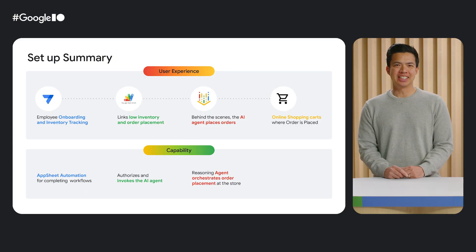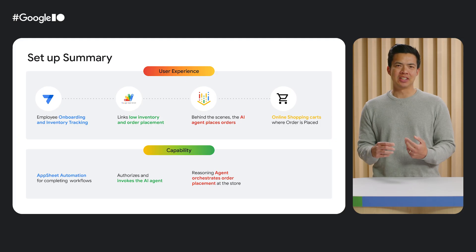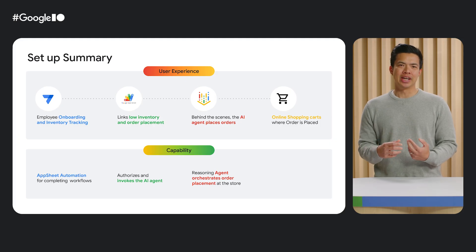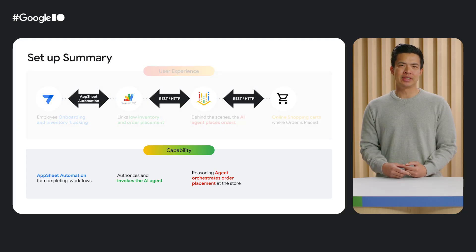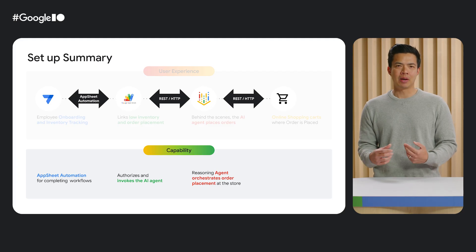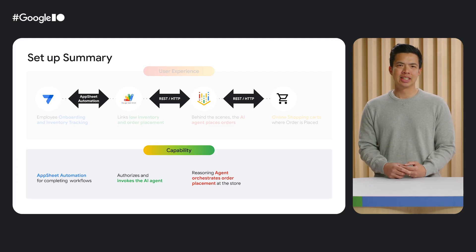Our AppSheet application seamlessly integrates with an AI agent through the use of Apps Script. Specifically, an Apps Script function uses REST API to invoke the agent, allowing for direct programmatic communication between AppSheet and the AI agent. Once invoked, the agent leverages the tools we've equipped it with. These tools enable it to perform tasks such as dynamically updating shopping carts and efficiently placing orders, automating key operational workflows.